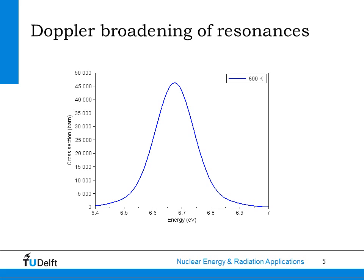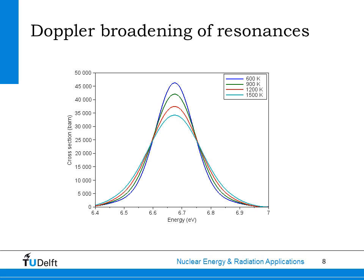This effect leads to an effective broadening of resonances. Here I've plotted the uranium-238 capture resonance at 6.67 eV at a temperature of 600 K. If the temperature of the fuel increases, the effective resonance broadens a bit. The green line shows the same resonance at 900 K, with a slightly lower peak value and higher values in the wings of the resonance. The higher the temperature of the fuel, the stronger this effect. The red line shows the resonance at 1200 K, then 1500 K, and then 1800 K.